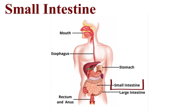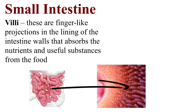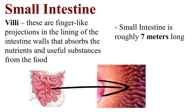The Small Intestine is where final digestion takes place through digestive juices from the liver and pancreas, until food becomes a thin, soluble substance that passes through the villi. Villi are finger-like projections in the lining of the intestine walls that absorb nutrients and useful substances from the food we eat. The small intestine is roughly 7 meters long.